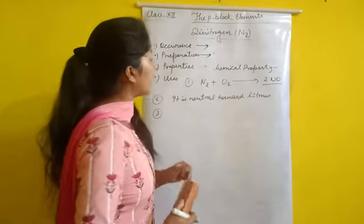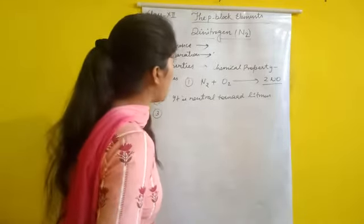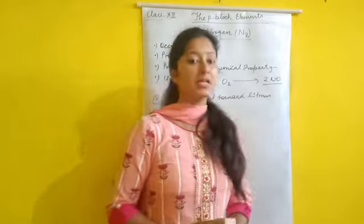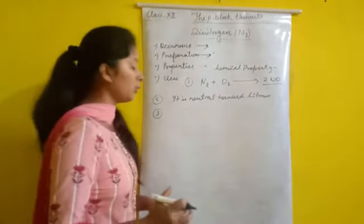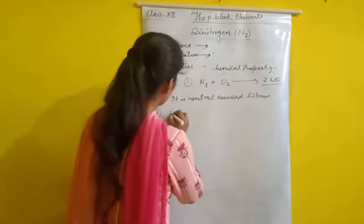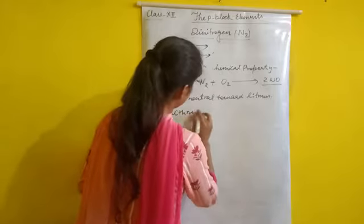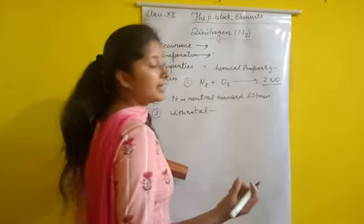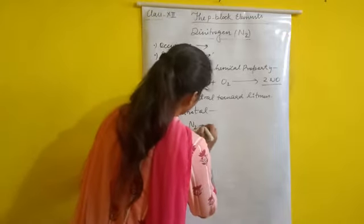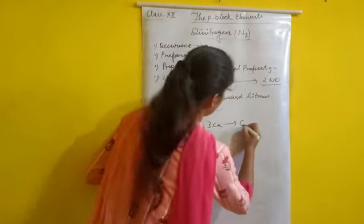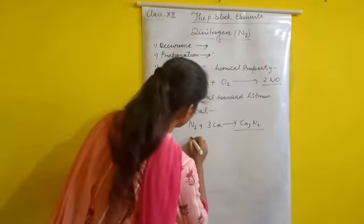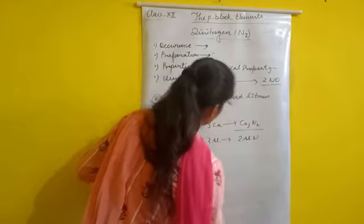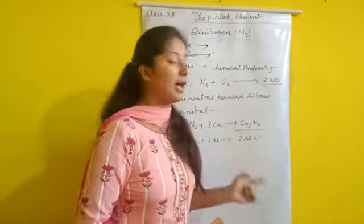Regarding reactivity with metals, dinitrogen reacts only with highly electropositive metals such as lithium, magnesium, calcium, and aluminium. For example, N2 reacts with calcium (Ca) to form calcium nitride (Ca3N2), and with aluminium (Al) to form aluminium nitride (AlN).